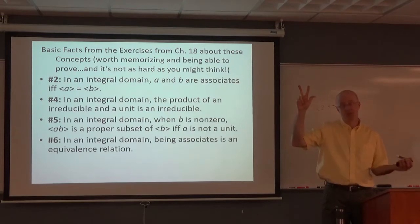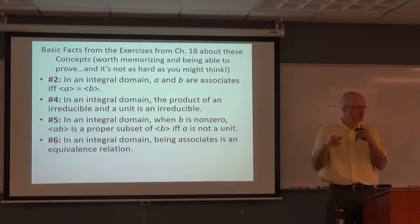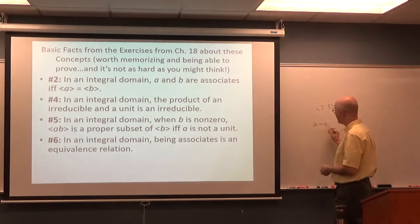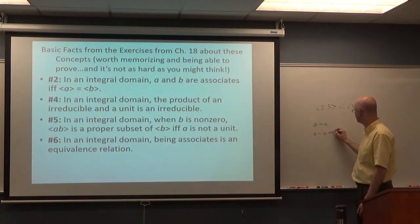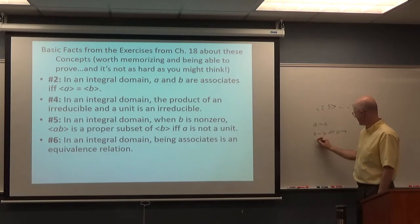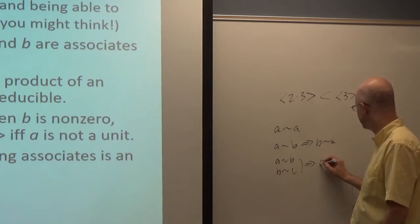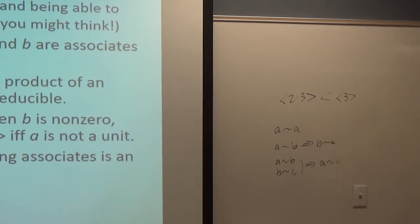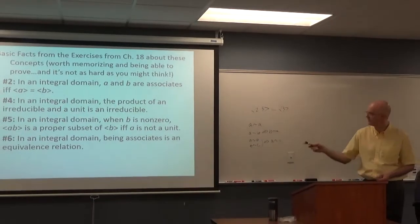Remember the equivalence relation properties in alphabetical order: reflexive — A is equivalent to A; symmetric — A equivalent to B implies B is equivalent to A; transitive — A equivalent to B and B equivalent to C implies A equivalent to C. Being associates is an equivalence relation, and that was a problem. If you didn't do it, you should study it — these are all fairly straightforward.